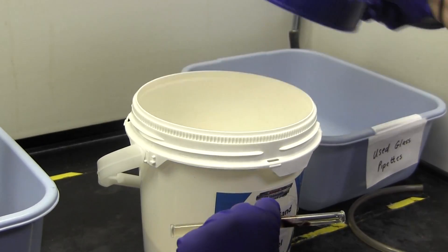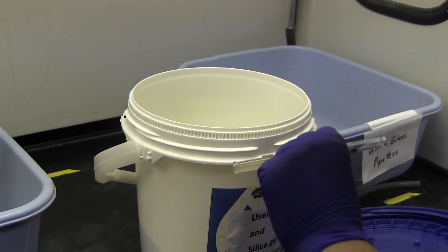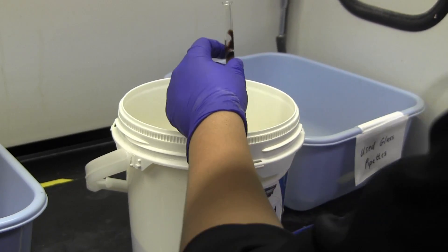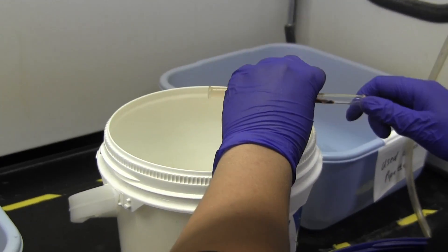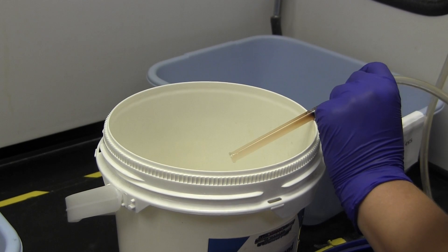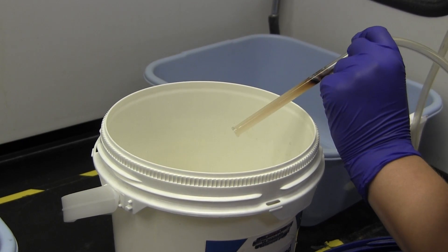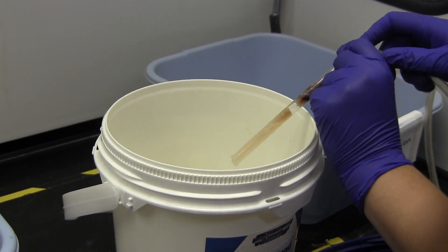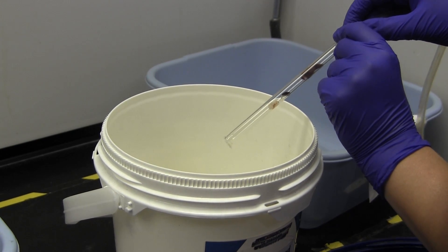When you finish the lab, dispose of your used silica gel in the silica gel waste container, located in the waste hood. First, take the stopcock off of the bottom of your column. Then use nitrogen to push the silica gel out of the tube straight into the waste container. Then, cap the waste container and wash your column with acetone.